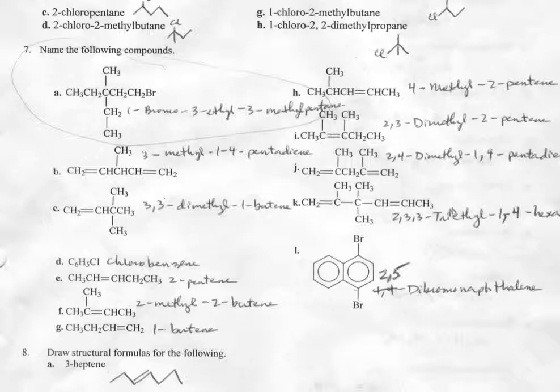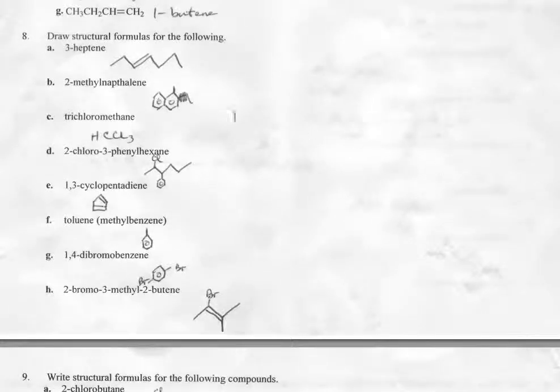8B is another one of those benzene ones. Naphthalene - that's two benzene rings together with a methyl group coming off somewhere. Don't worry about those ones. There's another cyclo one, and I guess I said not to worry about the cyclo ones.